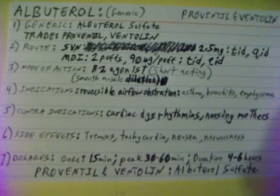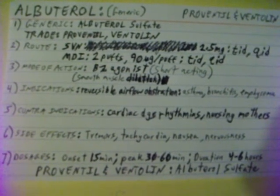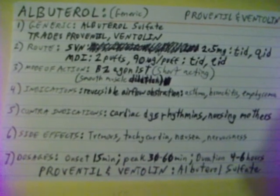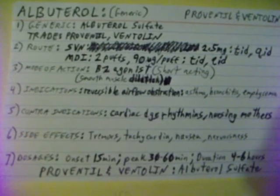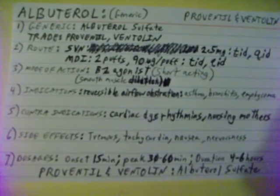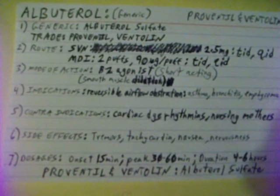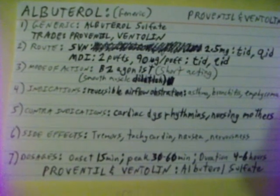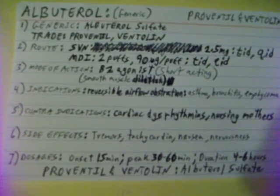Side effects of Albuterol sulfate are tremors, tachycardia, nausea, and nervousness. Albuterol sulfate's onset is 15 minutes, its peak is 30 to 60 minutes, and its duration is 4 to 6 hours.